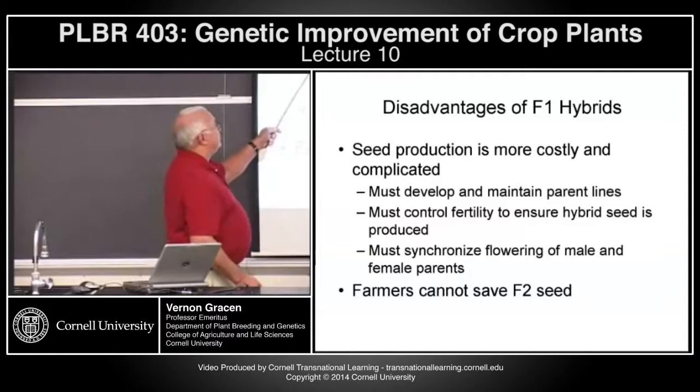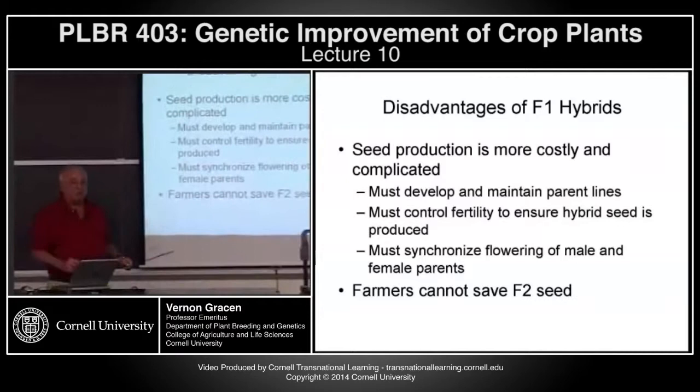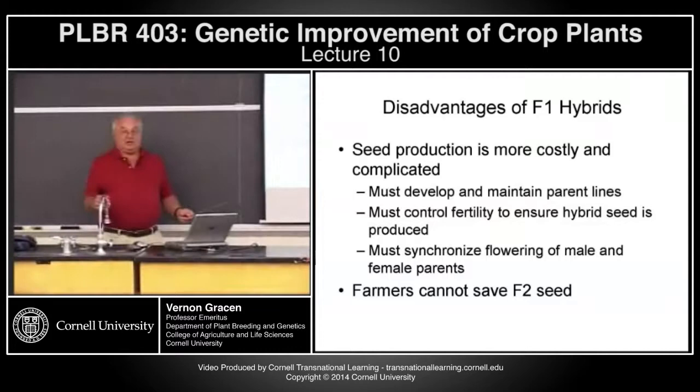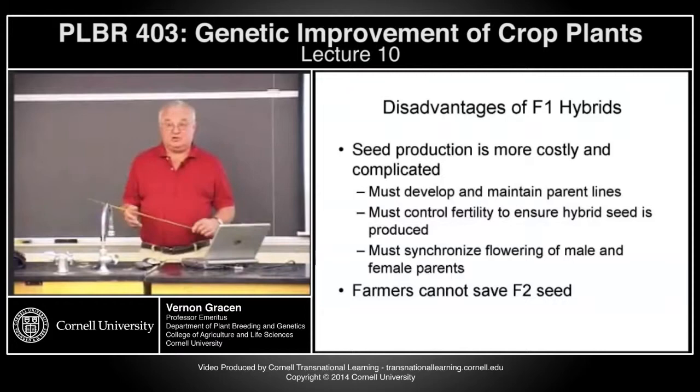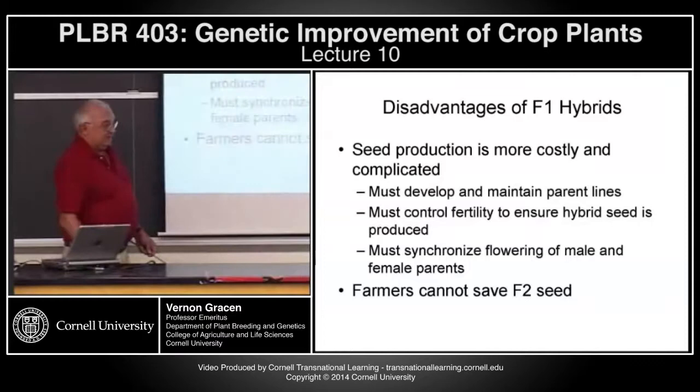The disadvantages: seed production is costly and more complicated. You've got to develop and maintain pure parent lines, control fertility to ensure hybrid seed is produced, synchronize flowering so the male plant pollinates at the time the female plant flowers. And farmers cannot save F2 seed.